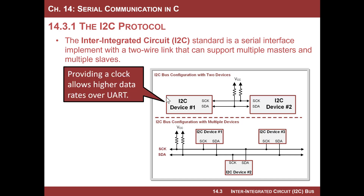I²C uses two wires to implement the bus. The reason I²C came about was because they wanted something faster than a UART. The UART is slower because it doesn't provide a clock, so you can only go so fast without a synchronous system — UARTs top out at about 115,200 baud. I²C says it's going to provide the clock, so one of the lines is a clock that allows data to be transmitted synchronously, enabling a higher data rate than a UART.